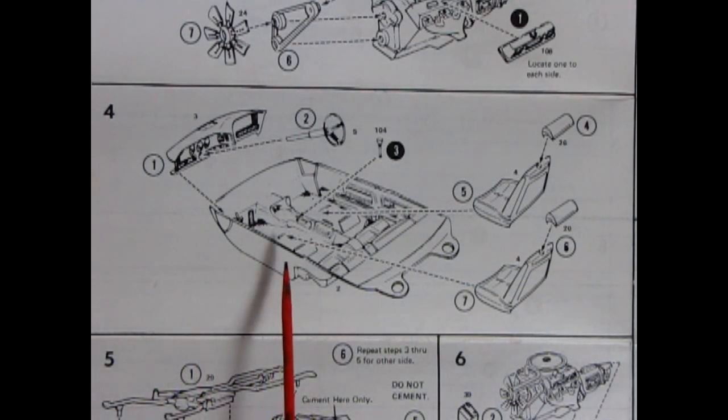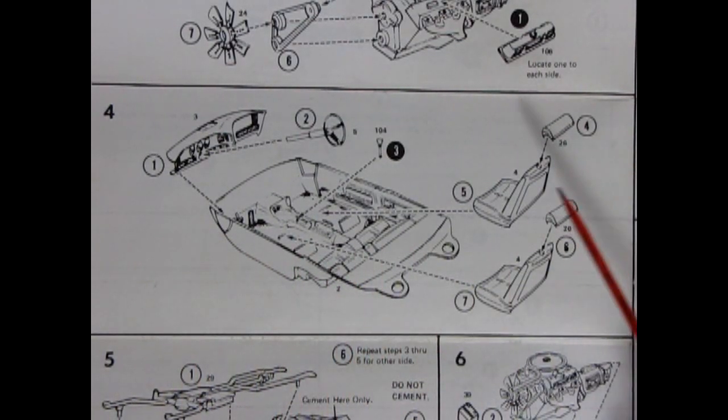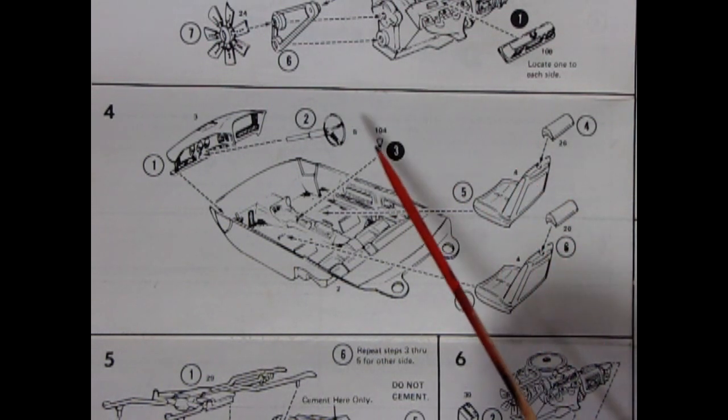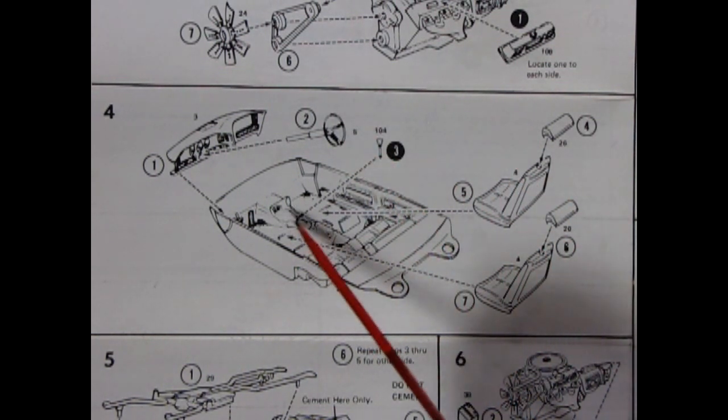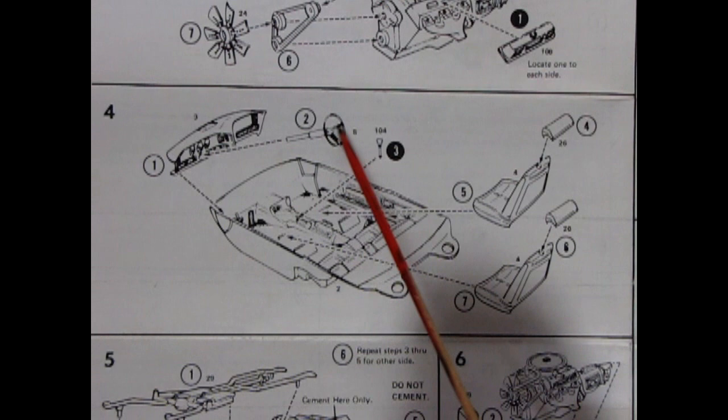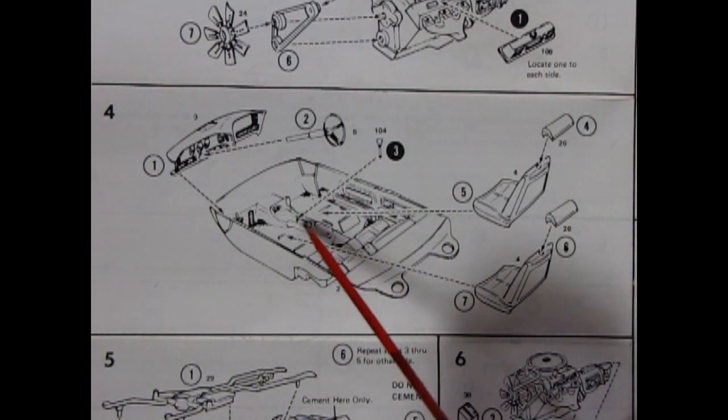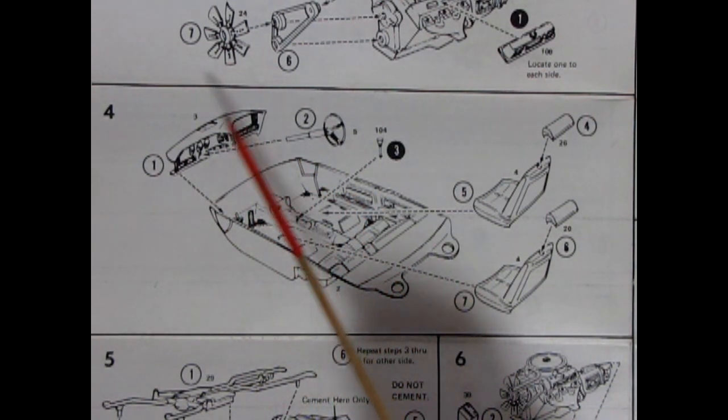Here we have our interior, which is a nice tub. It's got these bucket seats with headrests, a center gear shift, as well as our steering wheel. So that means there's a console down here, and our dashboard.